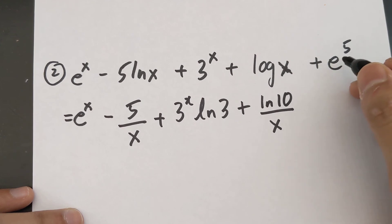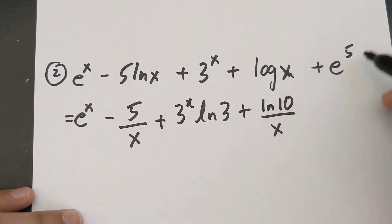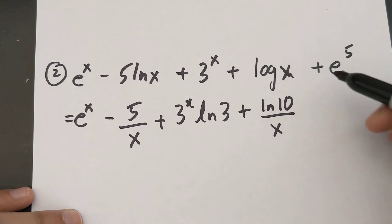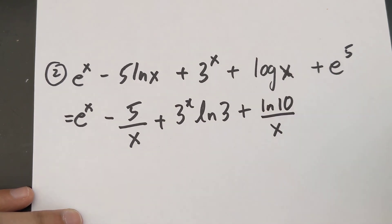And then finally, e to the power of 5. E to the power of 5 is a trick question—there's no x there. That's just a constant, and when you derive constants, that just disappears. So this is your final solution.